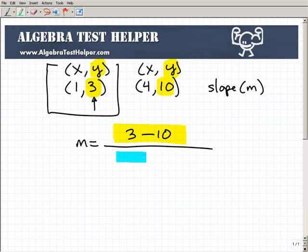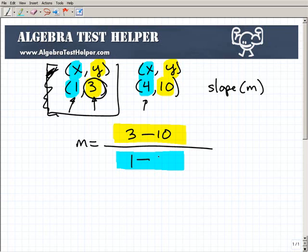So I have 3 minus 10, no issues here. The thing is this: now I have to find the differences of the x's in my denominator. So I have to ask myself, am I going to start with the 1, or the 4? These are my x's now. Well, because I started with the 3, because I started with this point's information first, I have to be consistent and start with it also in the denominator. So I have 3 minus 10, I have to start with this point's x value. So that's 1 minus 4.